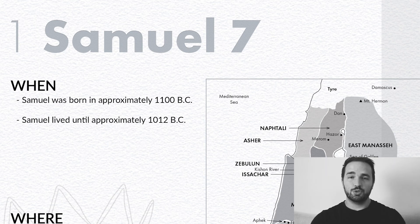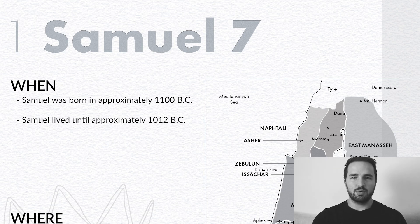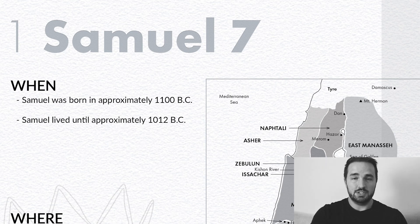When did the events of 1 Samuel chapter 7 take place? It happened during the lifetime of Samuel. He was probably born in about 1100 BC. I've narrowed that date down a little bit based on some more information I've read — I think it was closer to 1100 BC. He probably died around 1012 BC.